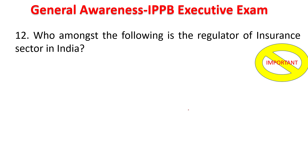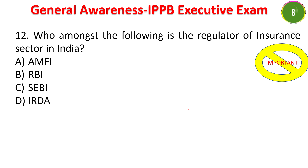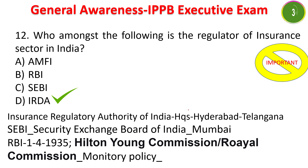Next question: who is the regulator of the insurance sector in India — AMFI, RBI, SEBI, or IRDA? The answer is IRDA — Insurance Regulatory and Development Authority of India. Its headquarters is in Hyderabad, Telangana. SEBI is the Securities Exchange Board of India, headquartered in Mumbai. RBI was formed in 1935 under the Hilton Young Commission and looks into monetary policy.